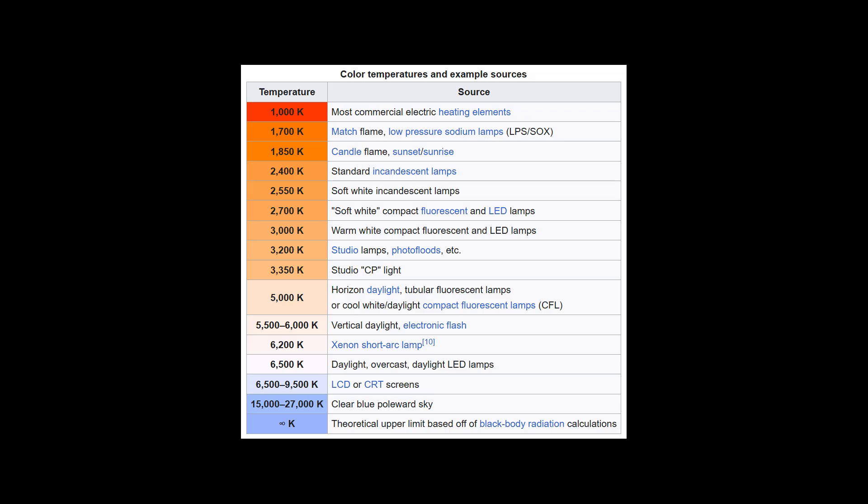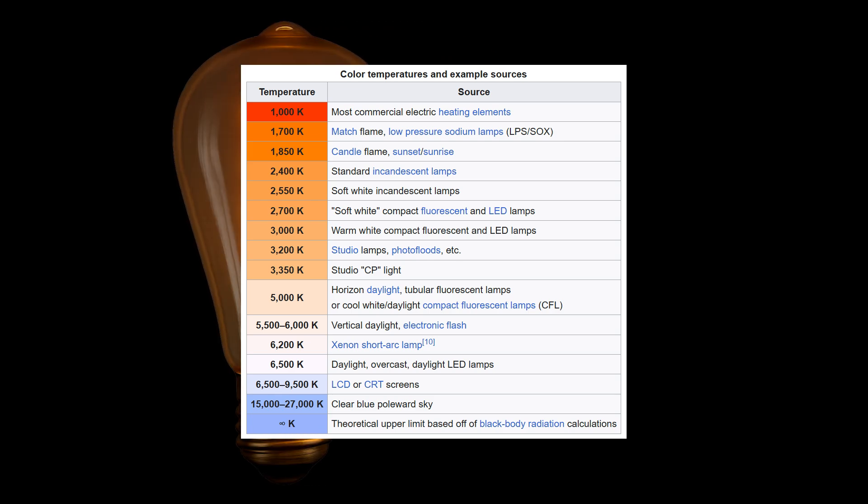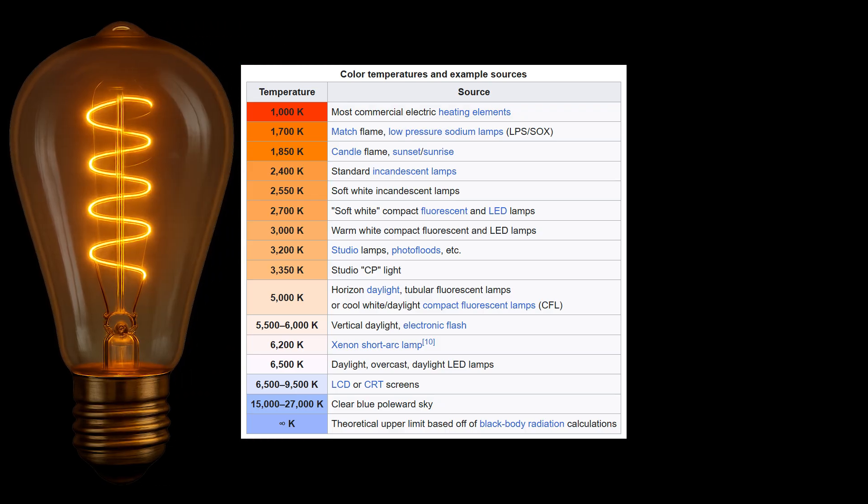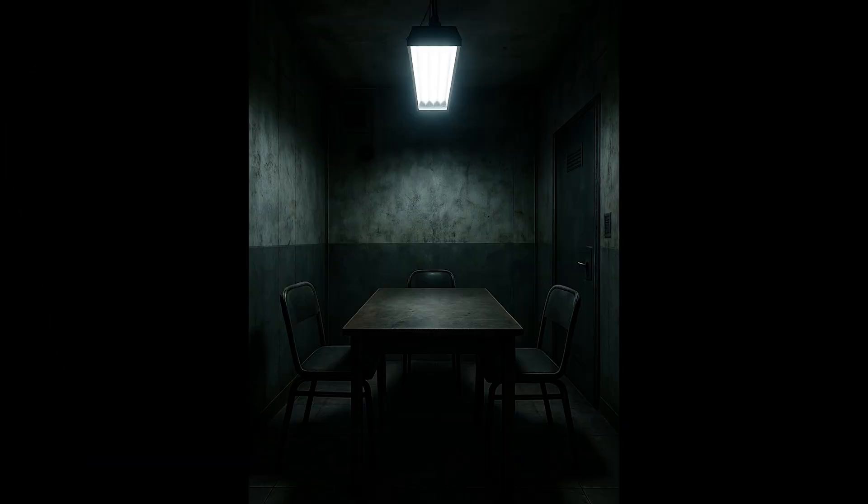2700 Kelvin looks like warm yellow, like an incandescent bulb. 4000 Kelvin is neutral white, like an office. And 6500 Kelvin is cool blue daylight. Want cozy vibes? Go for 2700K. The funny thing is that many people regard this as normal, but it's only because we got used to light from metal filaments that were so hot they emitted light. Want a murder mystery interrogation room? Go 6500K.